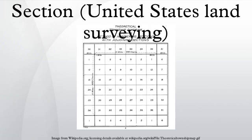In U.S. land surveying under the Public Land Survey System, a section is an area nominally one square mile, containing 640 acres, with 36 sections making up one survey township on a rectangular grid.